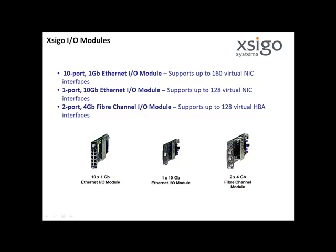SEGO I.O. modules: choose from Ethernet and fiber channel hot-swappable modules for the SEGO I.O. Director. Each module delivers dozens of virtual interfaces to any server attached to the high-speed InfiniBand fabric. The 10-port, 1-gigabit Ethernet I.O. module supports up to 160 virtual NIC interfaces; link aggregation is also supported. The 1-port, 10-gigabit Ethernet I.O. module supports up to 128 virtual NIC interfaces. The 2-port, 4-gigabit fiber channel I.O. module supports up to 128 virtual HBA interfaces.